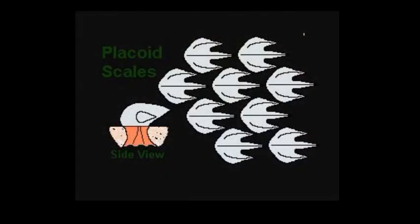Next type of scales are placoid scales. These are characteristic of cartilaginous fishes. These consist of backwardly directed spines arising from the round or rhomboid basal plate embedded in dermis.